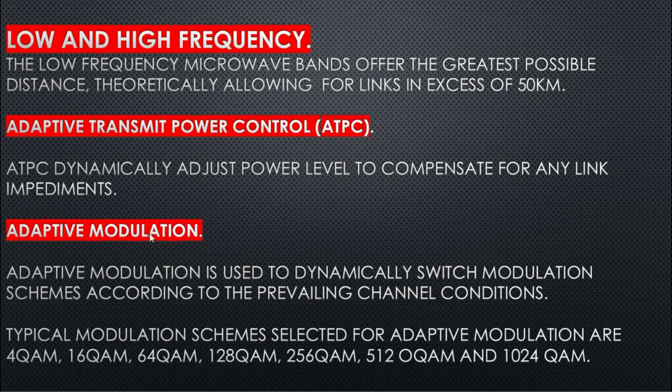Adaptive modulation. Adaptive modulation is used to dynamically switch modulation schemes according to the prevailing channel conditions. Different typical modulation schemes are selected for adaptive modulation, which are 4-QAM, 16-QAM, 64-QAM, 128-QAM, 256-QAM, 512-QAM, and 1024-QAM.